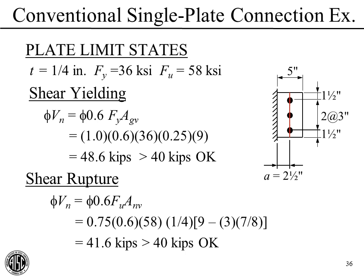We also have the basic limit states of shear yielding and shear rupture. For shear yielding, with phi equal to one checking on the gross section, we get 48.6 kips, which exceeds 40 kips—okay. Shear rupture is a little trickier: we check through this line and take out the three bolt holes with effective hole diameter of 7/8 inch (13/16 standard hole plus 1/16). We get 41.6 kips, which exceeds 40 kips—not by much, but it's okay.